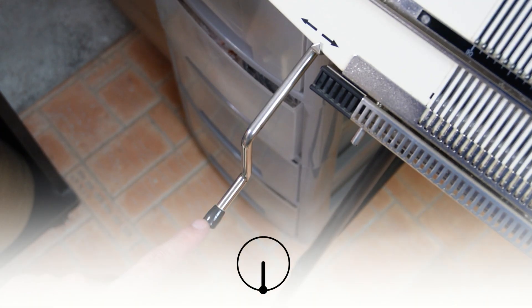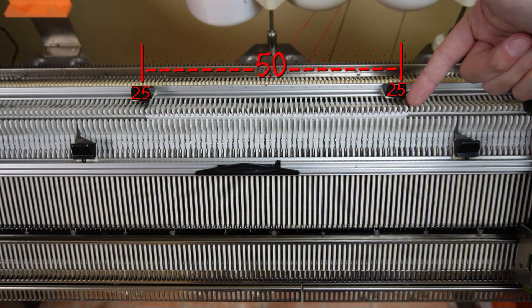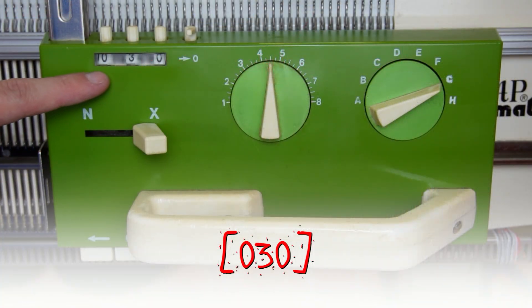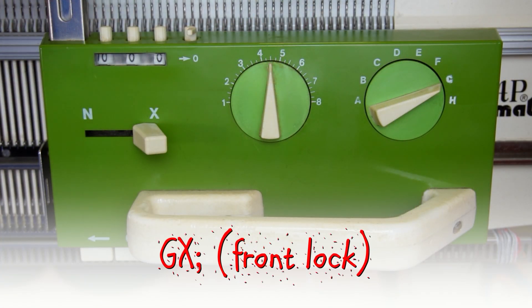My racking handle is in its lowest position. I have made a cast on over 50 needles on the back bed of the machine and I have knitted 30 rows to create a border for the piece. I will reset the row counter.